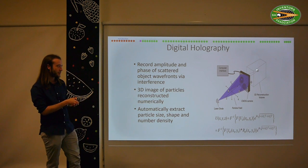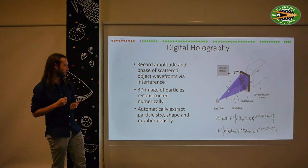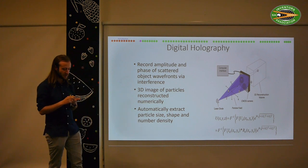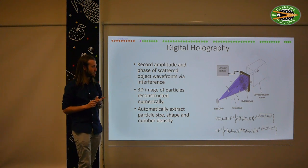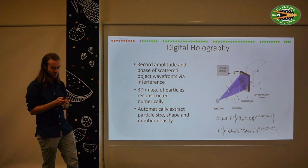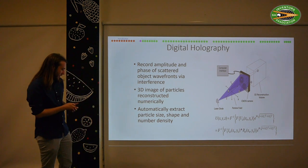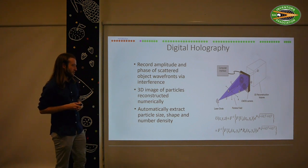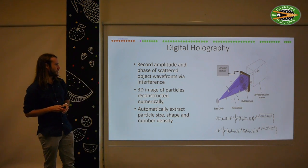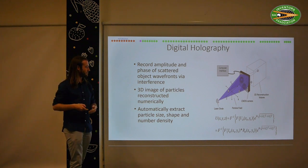Once we have our reconstructed 3D image, we can pull out the key observables — particle sizes, shapes, their spatial distribution, and their counts. We've developed algorithms to do this automatically. The key challenge at the moment is to be able to do that faster than we currently are.